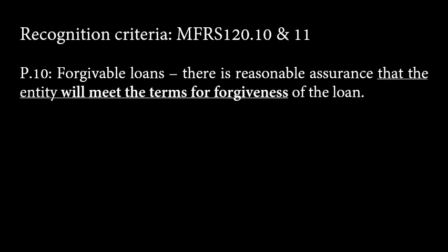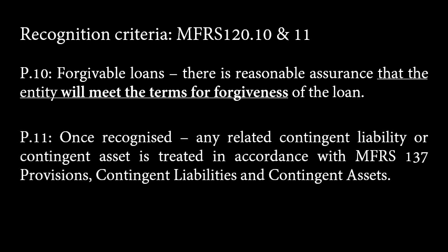Similarly for forgivable loans, there must be an assurance that you will meet the terms for forgiveness to make it probable — or in this case, turn it into a grant. And once the grant is recognized, any related contingent liability or contingent asset is treated in accordance with MFRS 137, Provisions, Contingent Liabilities and Contingent Assets.